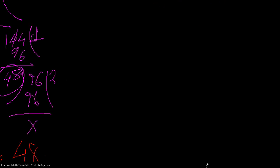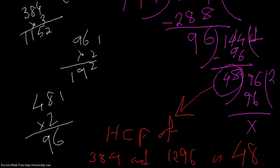This confirms what the rule states: divide the greater number by the less, the divisor by the remainder, then the second divisor by the second remainder, and so on until there is no remainder. The last divisor is the HCF required. Here we got 48 as the last divisor, so 48 is the HCF of the two numbers.